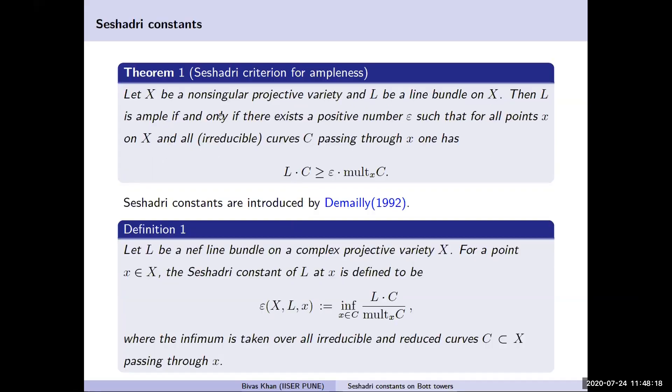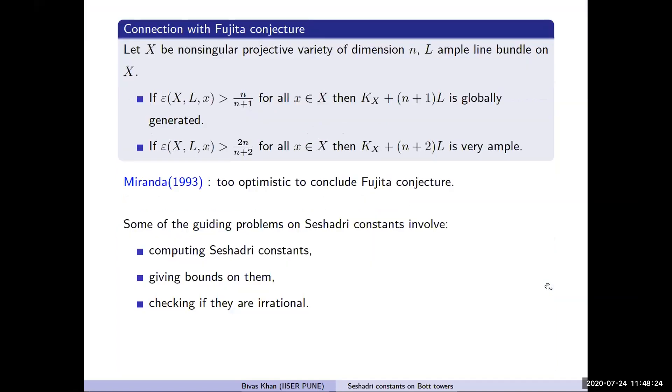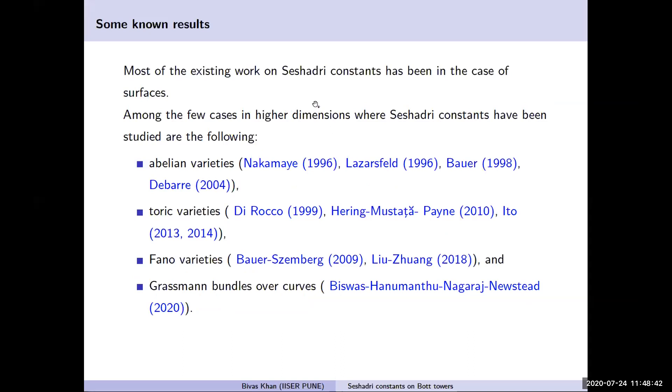So we started with Seshadri's criterion for ampleness which motivated Demailly to define Seshadri constants. There is a connection with Fujita conjecture, but Miranda pointed out this approach will not be helpful. Nevertheless, Seshadri constants have become an interesting invariant to study in their own right. There are lots of work on surfaces, but few works on higher dimensions. So we are interested in this class of toric varieties.